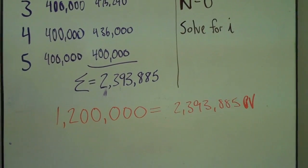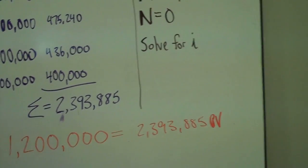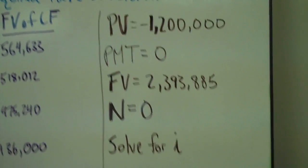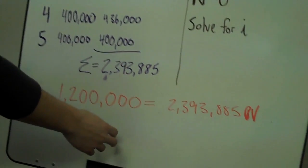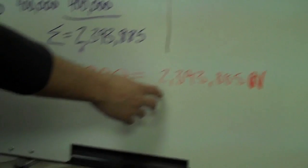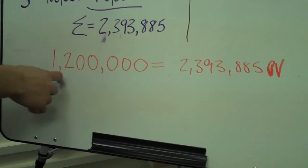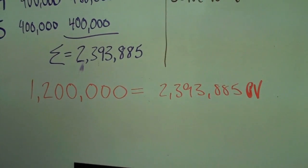Now this is just like an internal rate of return problem. We need to find out what interest rate discounted back would take this number back to $1.2 million.